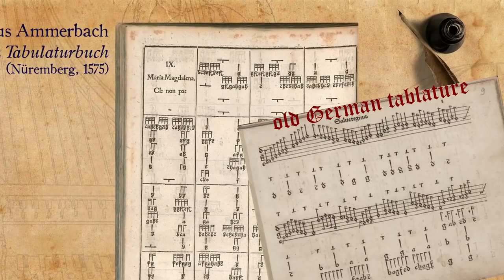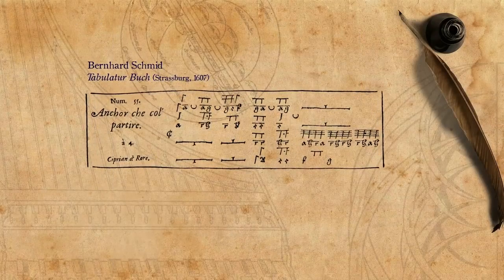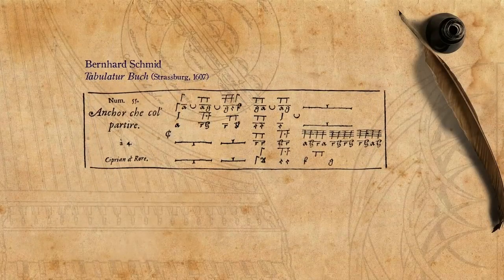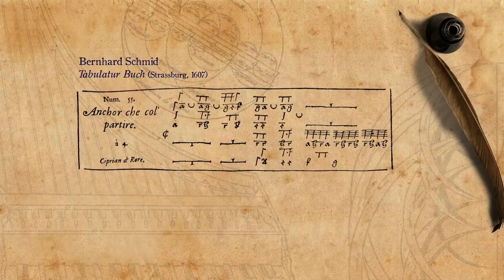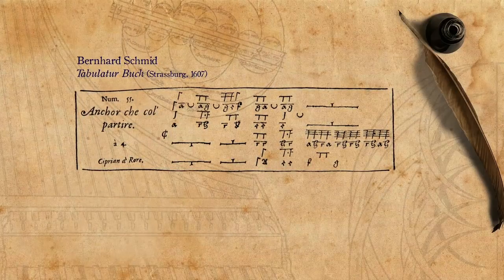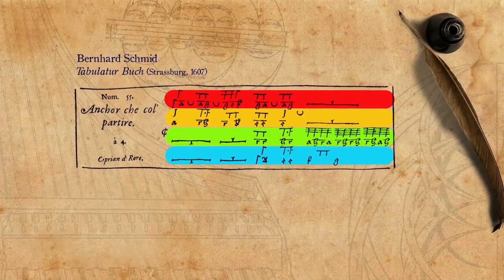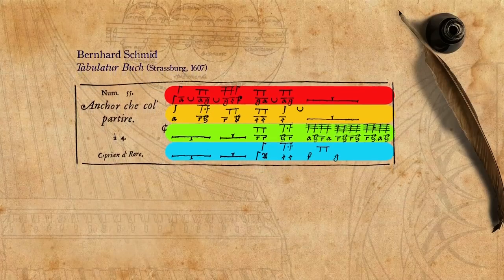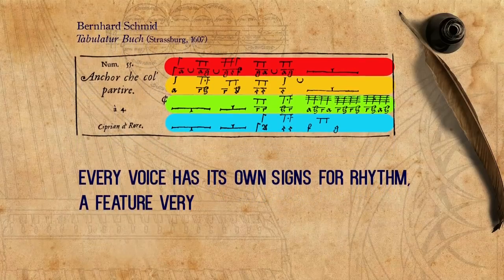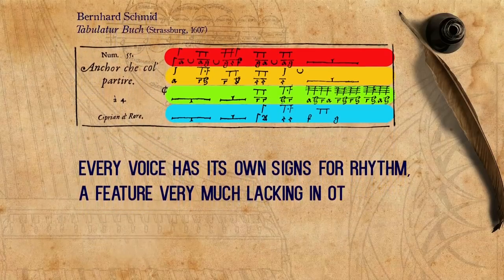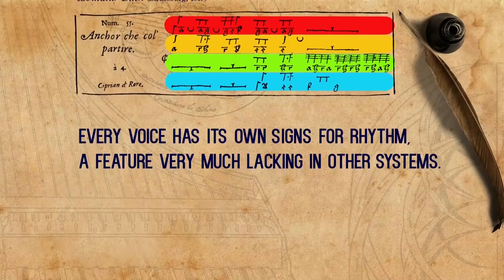Here we once again have Ancor che col partire in an intabulation by Bernhard Schmitt from 1607. Like the Spanish tablature, here we also have four lines for four voices. However, every voice has its own signs for rhythm — a feature very much lacking in other systems. In fact, apart from having the text, it is as accurate as a full score made from the original parts.